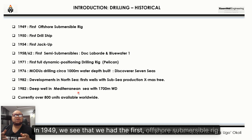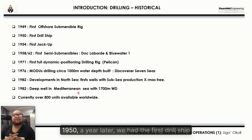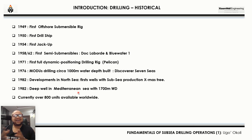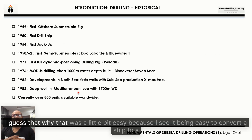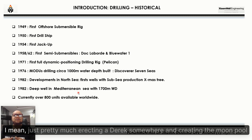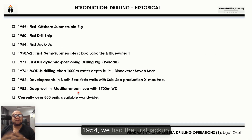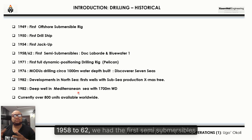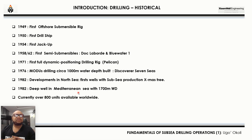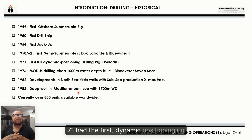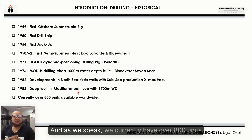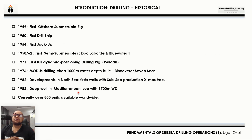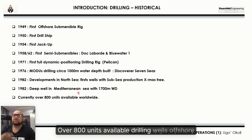In 1949 we had the first offshore submersible rig. In 1950, a year later, we had the first drill ship — which was likely straightforward since it was pretty much a matter of erecting a derrick and creating the moon pool. In 1954 we had the first jack-up. From 1958 to 1962 we had the first semi-submersible. In 1971 we had the first dynamic positioning rig. As we speak, we currently have over 800 units available drilling wells offshore.